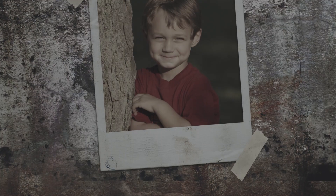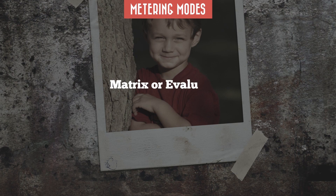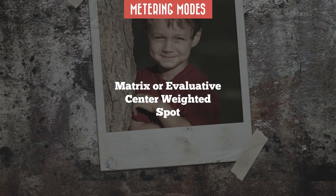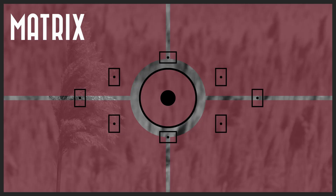The three most popular types of metering modes include matrix metering — also known as evaluative mode if you're a Canon user — center-weighted metering, and spot metering. Depending on your camera, you may have more options, but let's go over the basics of these three. You can control how your camera meters the available light based on one of those three metering modes.